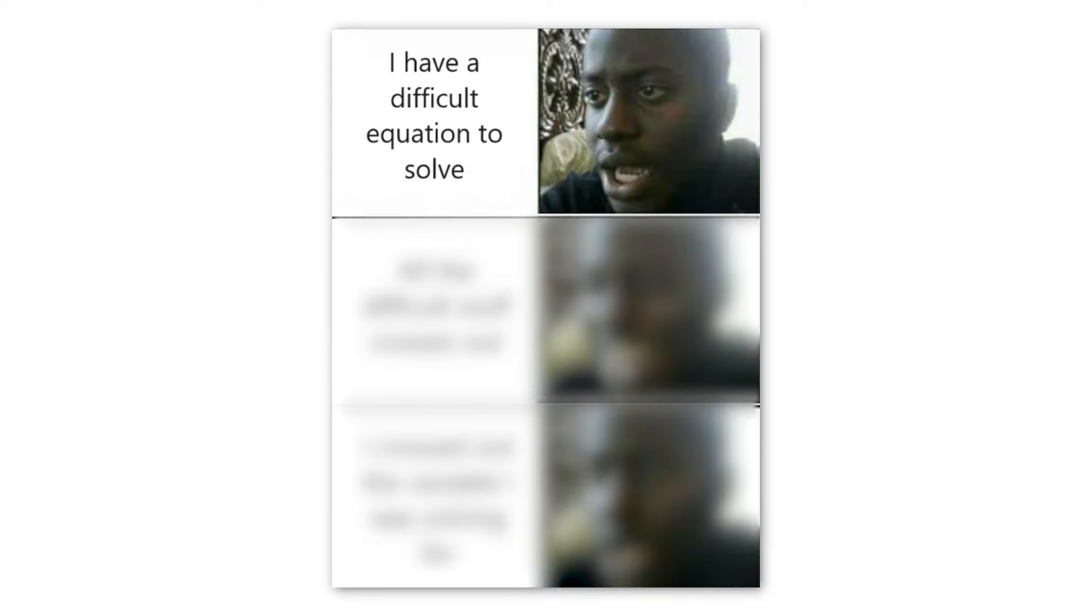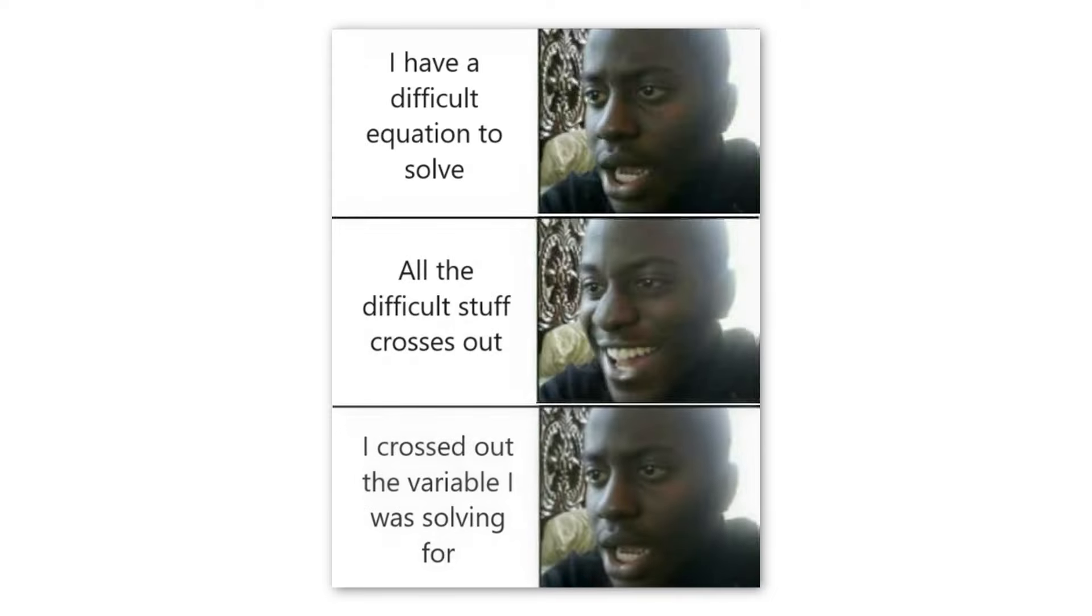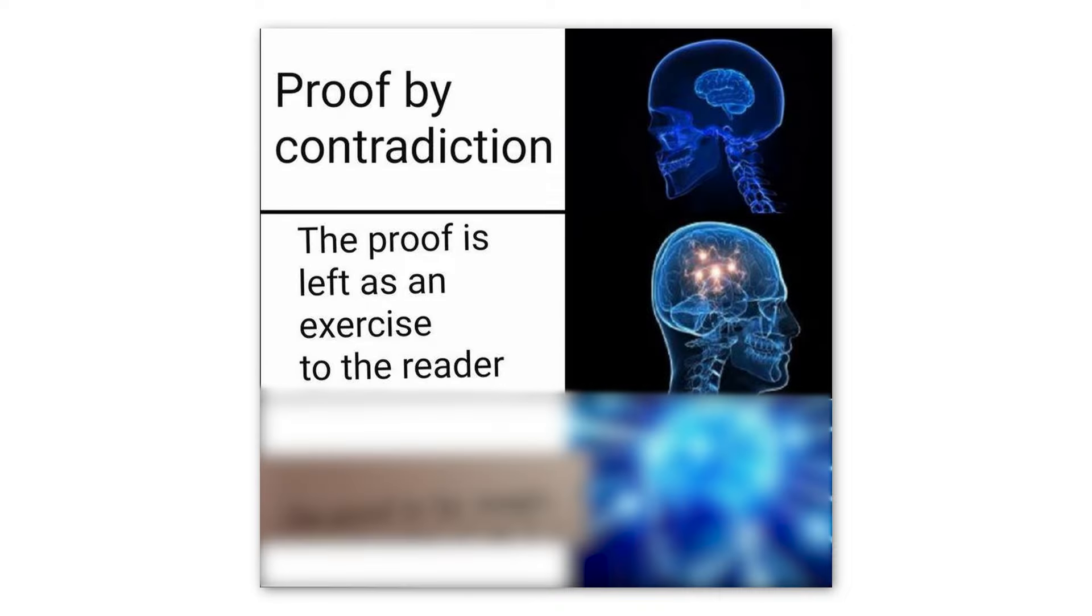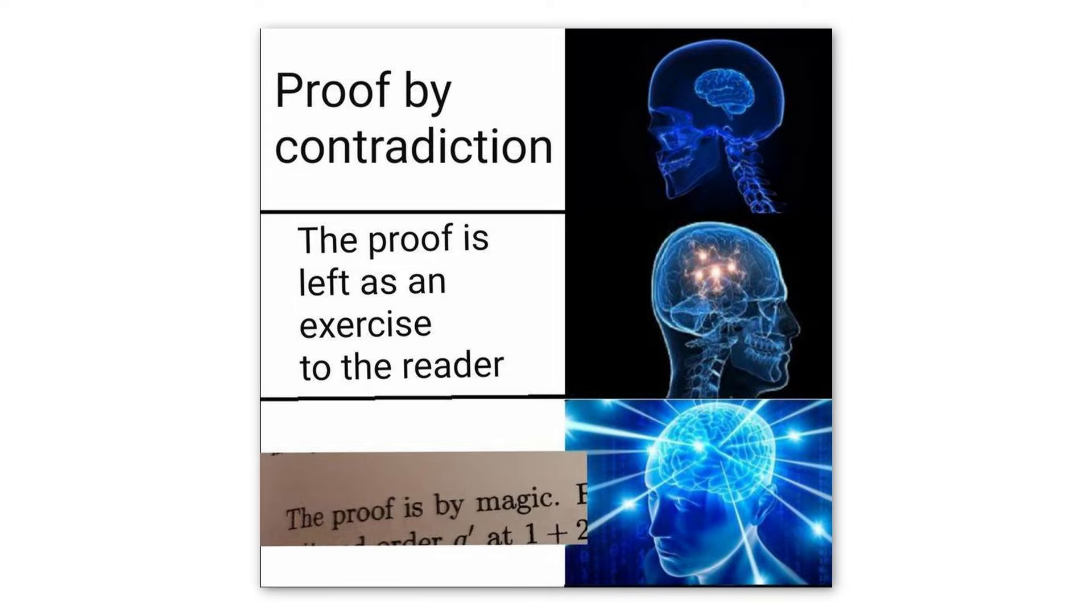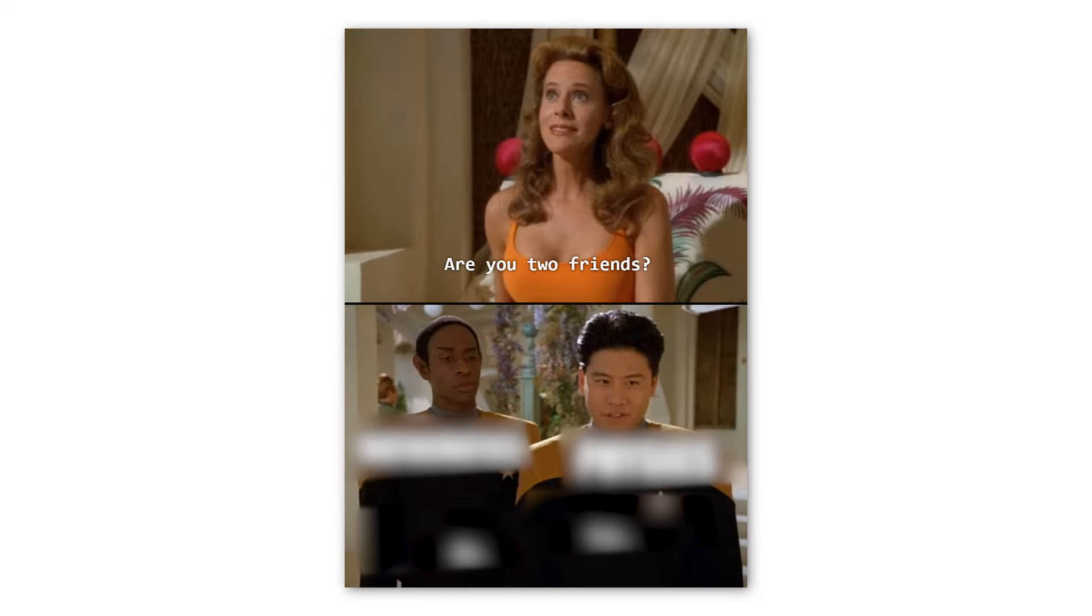I have a difficult equation to solve. All the difficult stuff crosses out. I crossed out the variable I was solving for. Proof by contradiction. The proof is left as an exercise to the reader. The proof is by magic. Erase under of at 1 plus 2. Are you two friends? Mathematics. No.